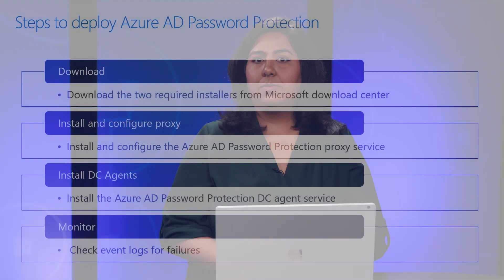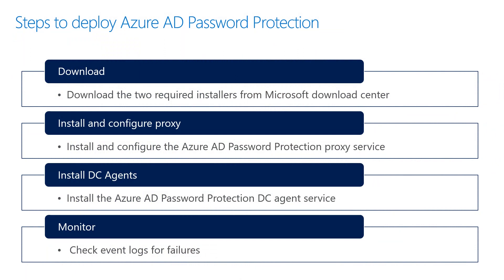Now that we understand how Azure AD password protection validates passwords on-prem, let's look at the steps to deploy the solution. First, download the DC agent and proxy agent installers from Download Center. Second, install and configure the proxy service — the proxy agent must be installed on a member server. It can run on any domain-joined machine in the current Active Directory forest and does not have to be a dedicated server. You could install it on a server that already has AAD Connect and it would work. Installing the proxy service does not require a reboot. Since the proxy is the one talking to Azure AD, it needs to be registered with Azure AD. Finally, install DC agents on every DC and reboot the domain controllers after installation.